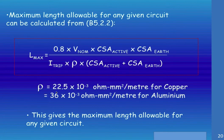The ρ for copper is 22.5 × 10⁻³ ohm-mm²/metre for copper, and if you do happen to be in some unusual situations where we're using aluminium, it's 36 × 10⁻³ for aluminium. This effectively gives you the maximum length allowable for any given circuit.